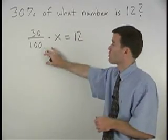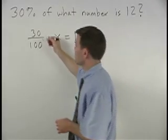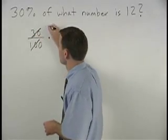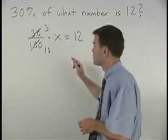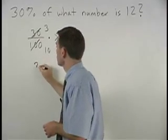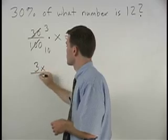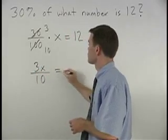Notice that 30 over 100 can be reduced to 3 over 10. So rewriting our problem, we have 3x over 10 equals 12.